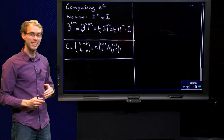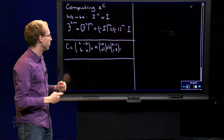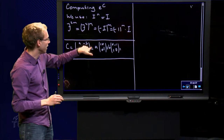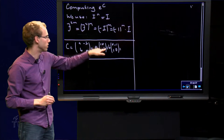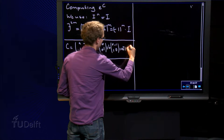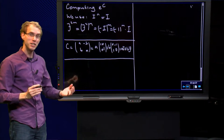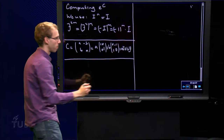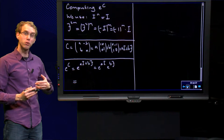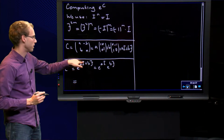We express a c matrix as a linear combination of i and j. So we have c equals a, b, minus b — as usual — and we can split it into two parts: a times the identity matrix plus b times the j matrix. We have now split the c matrix into those two parts, and we write c equals a times i plus b times j.